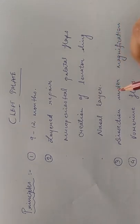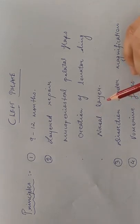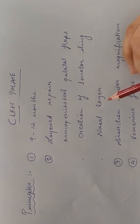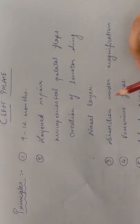Surgically, the important points are that dissection should always be done under magnification. Dr. Sommeland advocates that everything should be done under the microscope, but a minimum loop magnification is definitely required. In cases where the closure is difficult with the available tissue, vomerine flaps can be raised and used to repair the nasal layer.